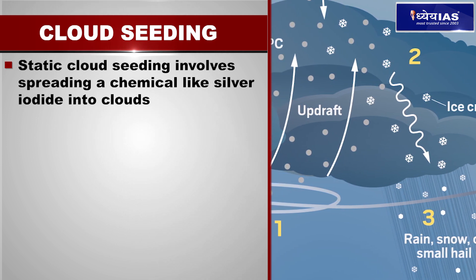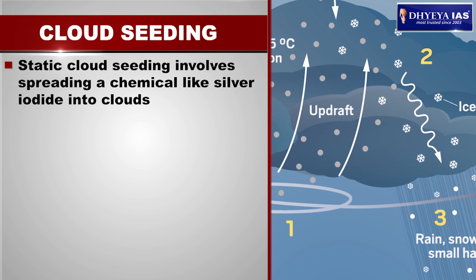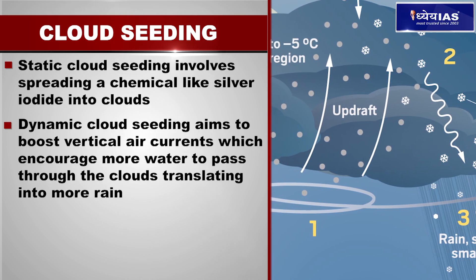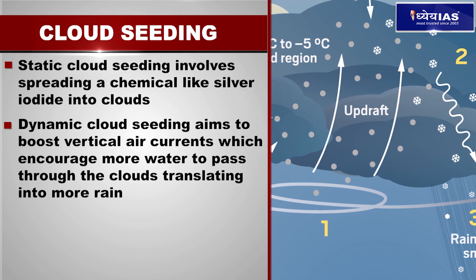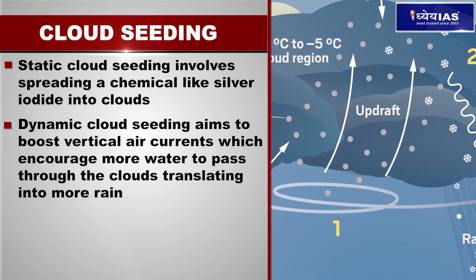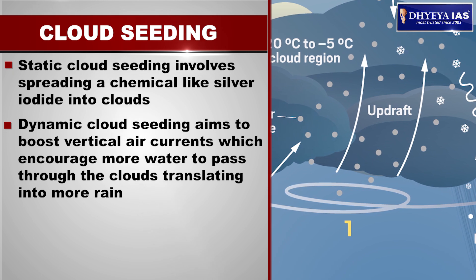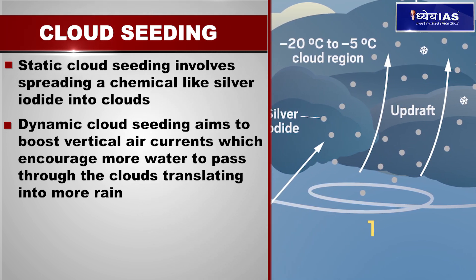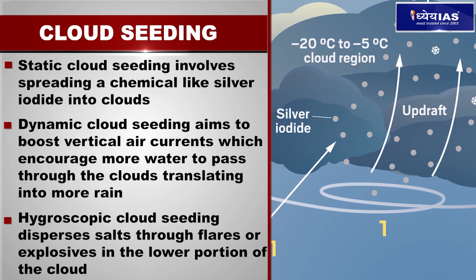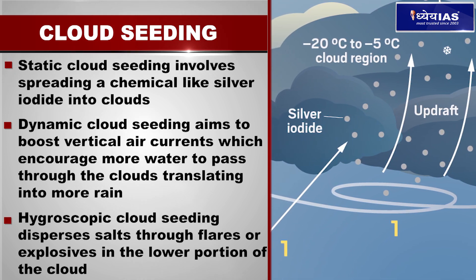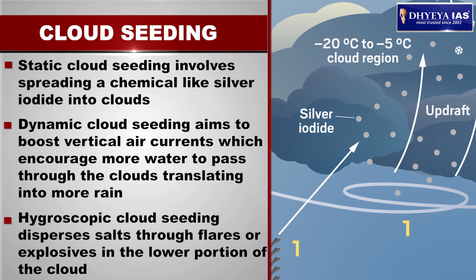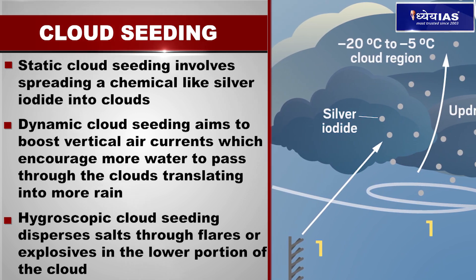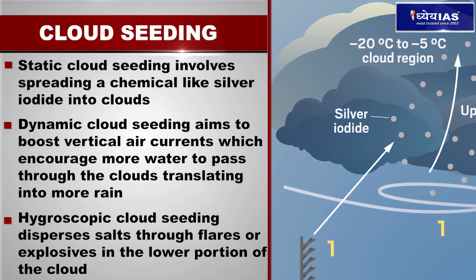Silver iodide makes rain clouds more effective at dispensing their water. Dynamic cloud seeding aims to boost vertical air currents, which encourage more water to pass through the clouds, translating into more rain. Hygroscopic cloud seeding disperses salts through flares or explosives in the lower portion of the cloud, and the salt grows in size as water joins them.